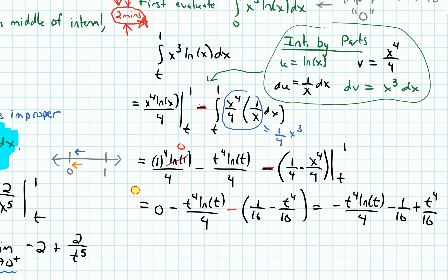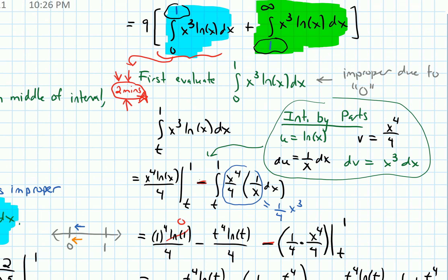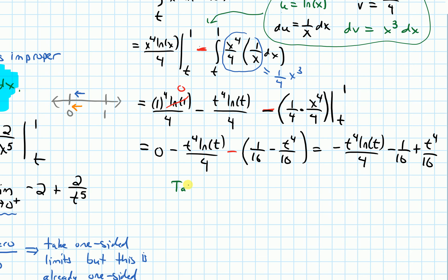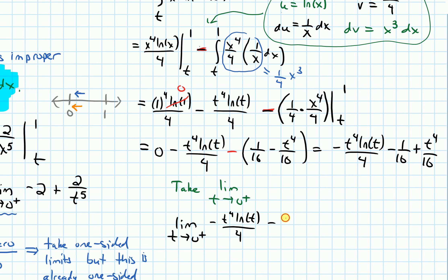Remember, we need to take a limit because this is an improper integral. The integral was over [0, 1] and what made it improper was the 0. Approaching 0 from within the interval means approaching from the right-hand side. So we need to take the limit as t approaches 0 from the right of: −(t⁴ ln t)/4 − 1/16 + t⁴/16.